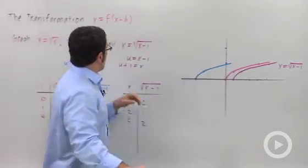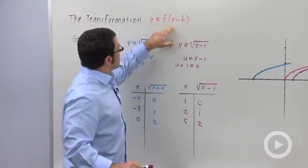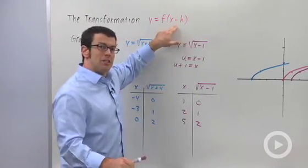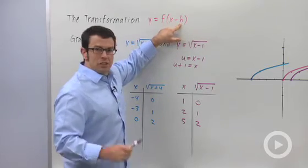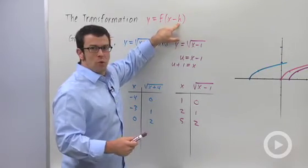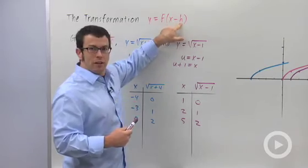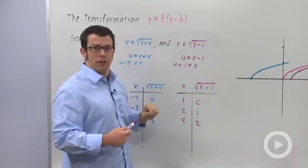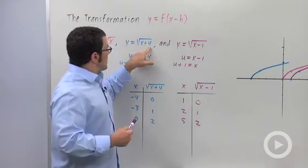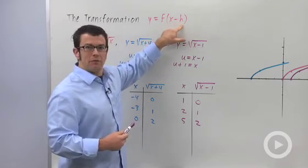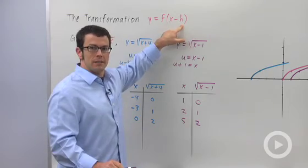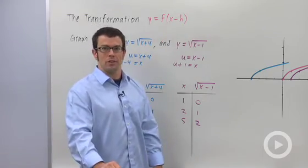So let's just review really quickly what this transformation does. Y equals f of x minus h is a horizontal shift. If h is positive, it shifts the graph to the right. Like when h was 1, we had x minus 1. The graph was shifted to the right 1 unit. In this instance, you can think of h as being negative 4. It's like x minus negative 4. The graph shifts to the left 4 units. That's how horizontal translation works.